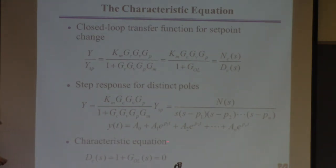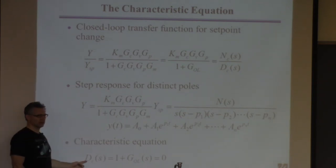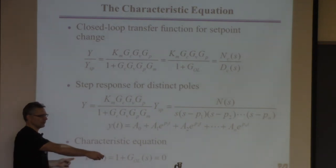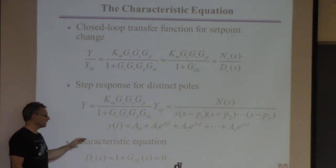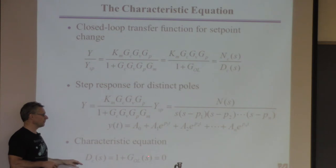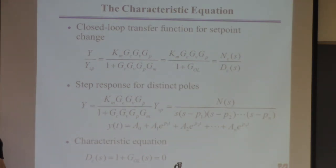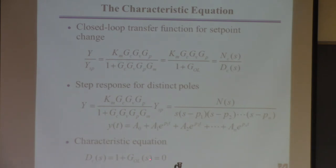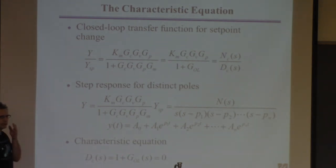This equation — 1 + G_OL = 0 — is called the characteristic equation. The denominator of the closed-loop transfer function equals 1 + G_OL. Once you get a polynomial for that, it's called the characteristic polynomial. We form this equation, get a polynomial, find the roots, check if they have negative real parts — that determines closed-loop stability. The complication is this polynomial depends on the controller parameters like KC, tau_i, tau_d.